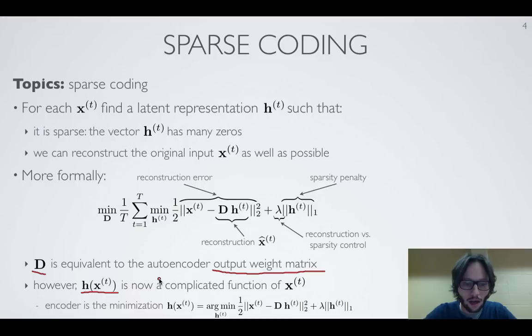But in sparse coding, the h for which we'll be measuring and counting this loss is going to be the h that minimizes the sum of the loss in the sparsity term. Another way of seeing it is that the h term here, which depends on x(t), is the argument of the sum of the reconstruction term and the sparsity term. So now the encoding function, given some input, is no longer a linear activation followed by non-linearity. It's the result of a more complicated optimization problem.